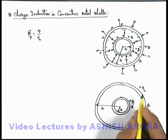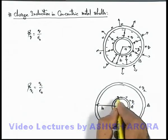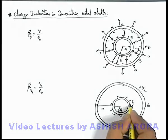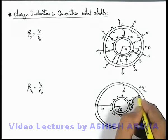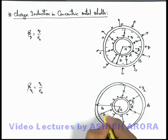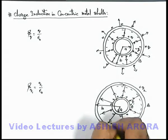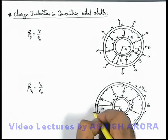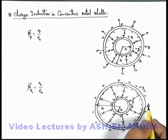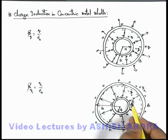In this situation, the inner shell will produce a total flux of Q1/ε₀ in the outward direction, because due to mutual repulsion the whole of its charge will reside on the outer surface. Since B is also a metal shell, the whole of this flux will terminate on the inner surface of shell B. Therefore, an equal charge -Q1 will be induced on the inner surface of shell B, which will absorb the total flux originated by the outer surface of inner shell A.